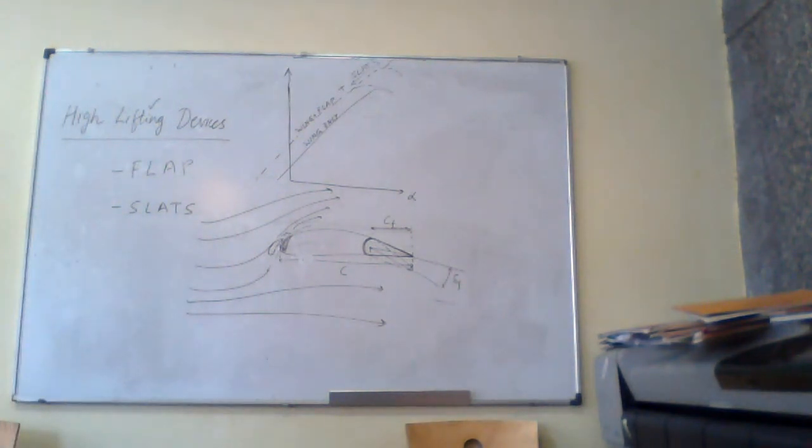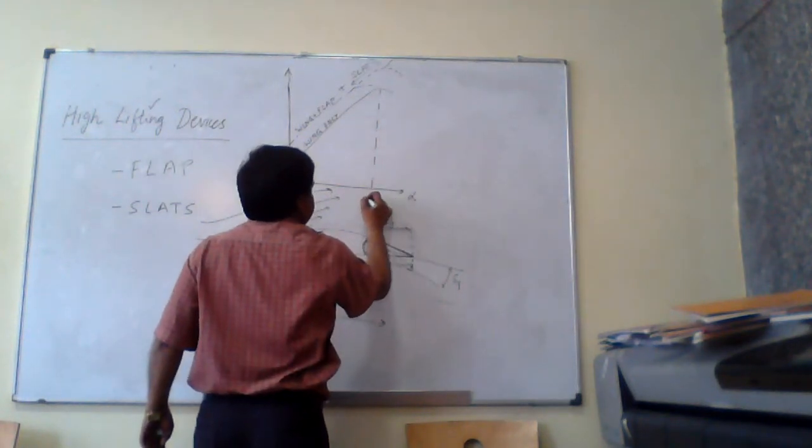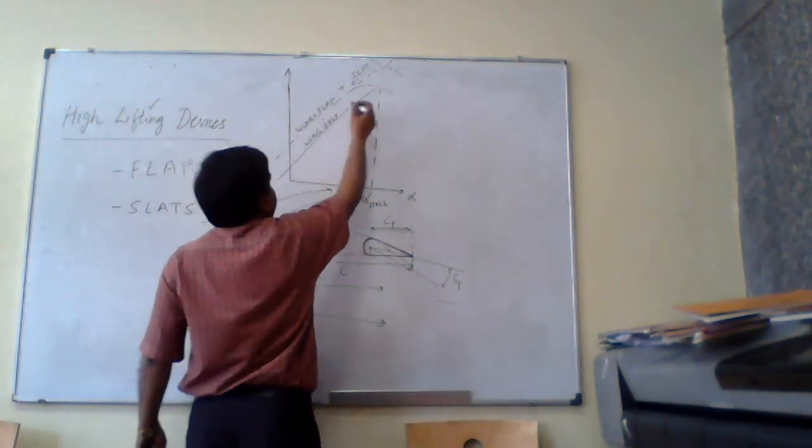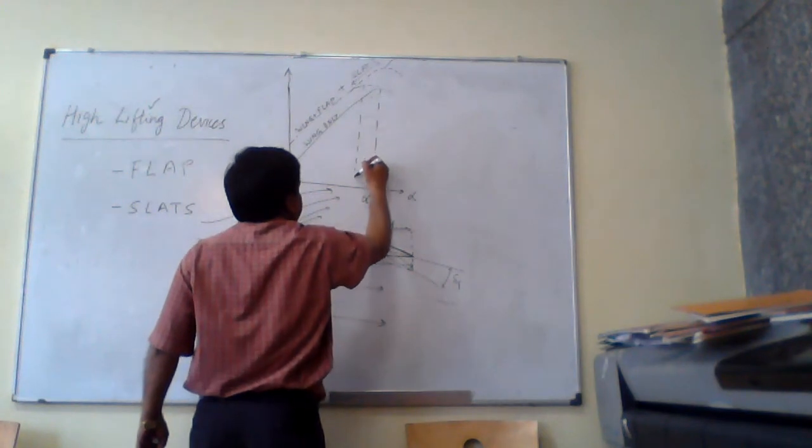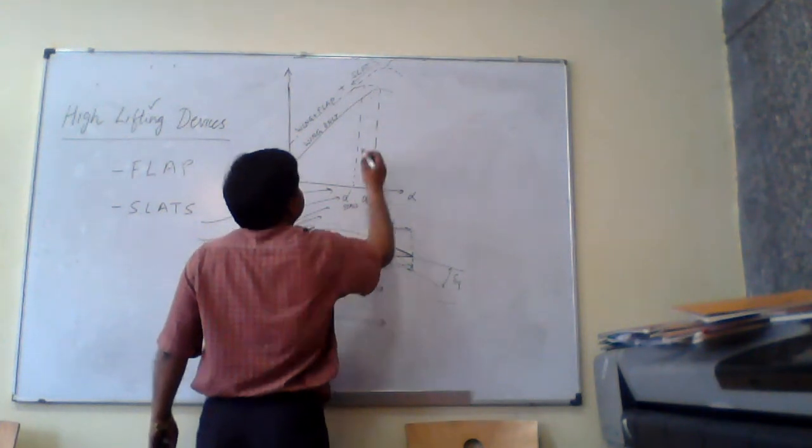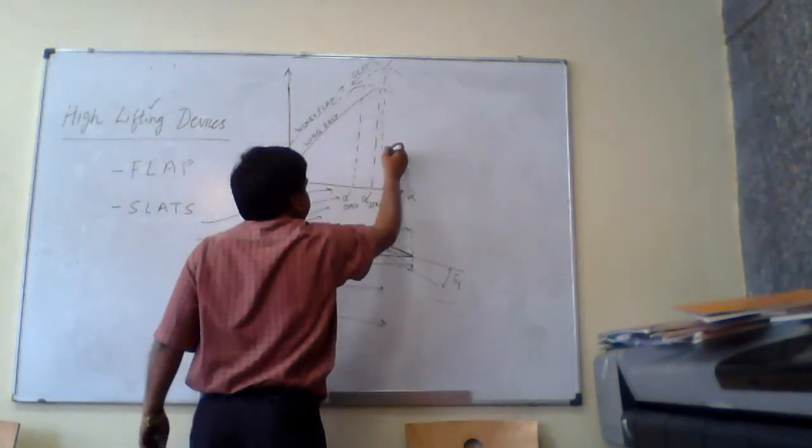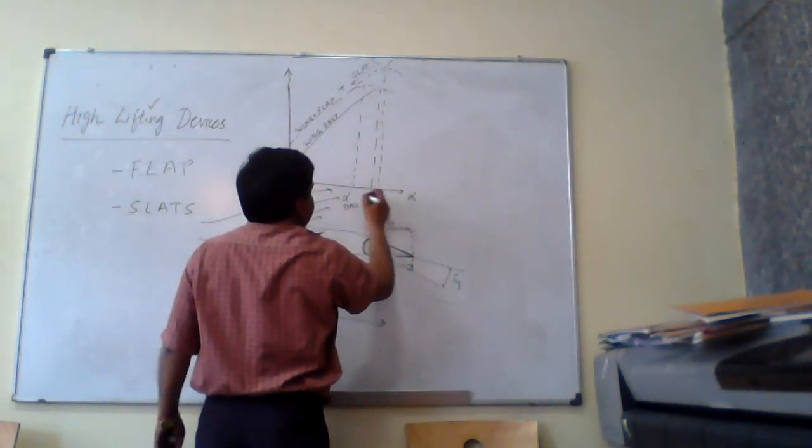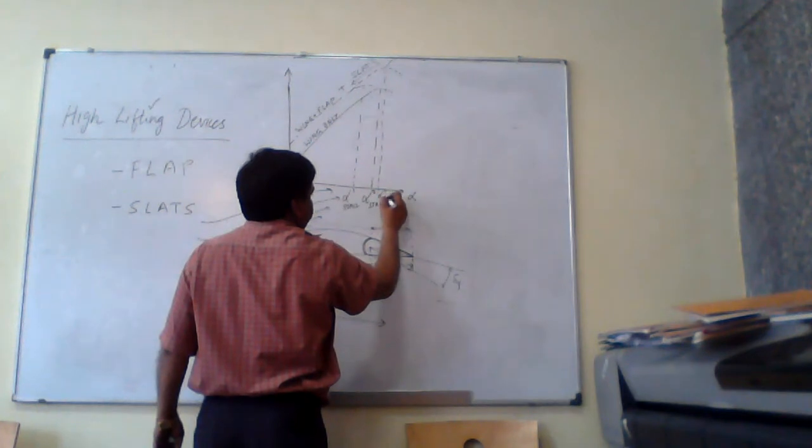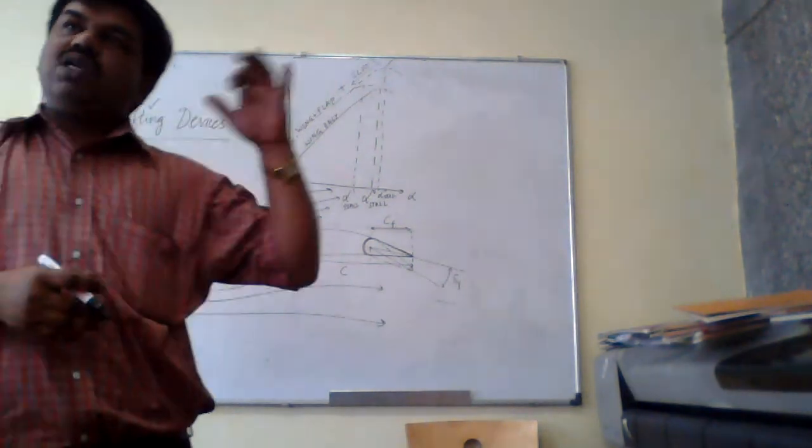What is the advantage if you see stall? This is your alpha stall. Now when you deflect flap, your alpha stall is decreasing, which is dangerous. Your aircraft can stall at lower angle of attack, so I can avoid this using this slat. So I have this: if it is zero, this is one, let's say this is two. So I am able to get more lift as well as more alpha stall.